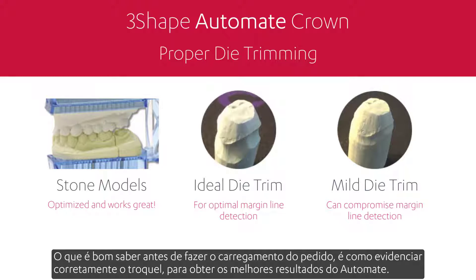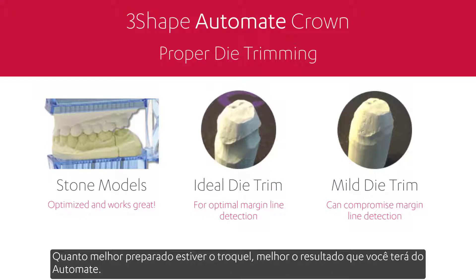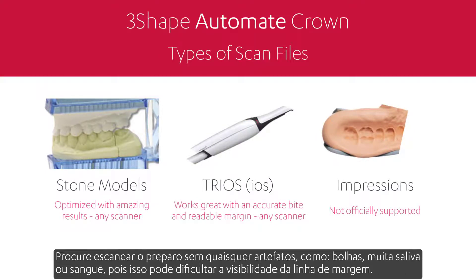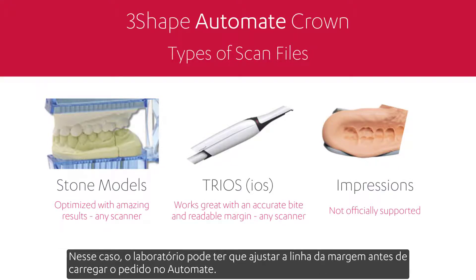What is good to know before uploading the order is how to properly trim the die to get the best results from Automate. The better the die is prepared, the better result you'll get. This is applicable for gypsum cases as well as intraoral scans. Keep in mind to scan the preparation without any artifacts like bubbles, too much saliva, or blood, as this may cause a lack of visibility of the margin line. In that case, the lab might need to set the margin line before uploading the order into Automate.